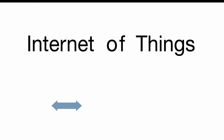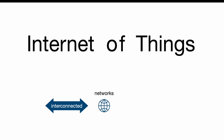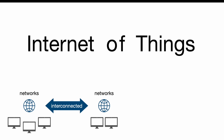Internet stands for interconnected networks — so at least two networks which are connected and communicate to each other. Networks can be everything from a local home network of two computers or a computer and a tablet, but can also be big networks of many devices such as you find in companies or organizations.